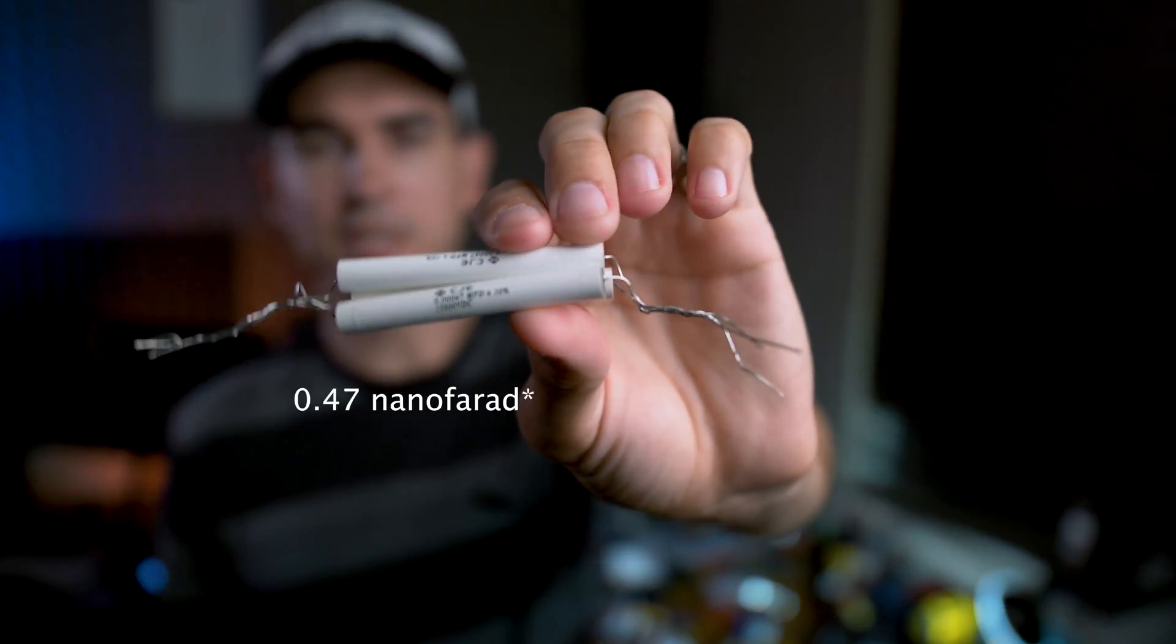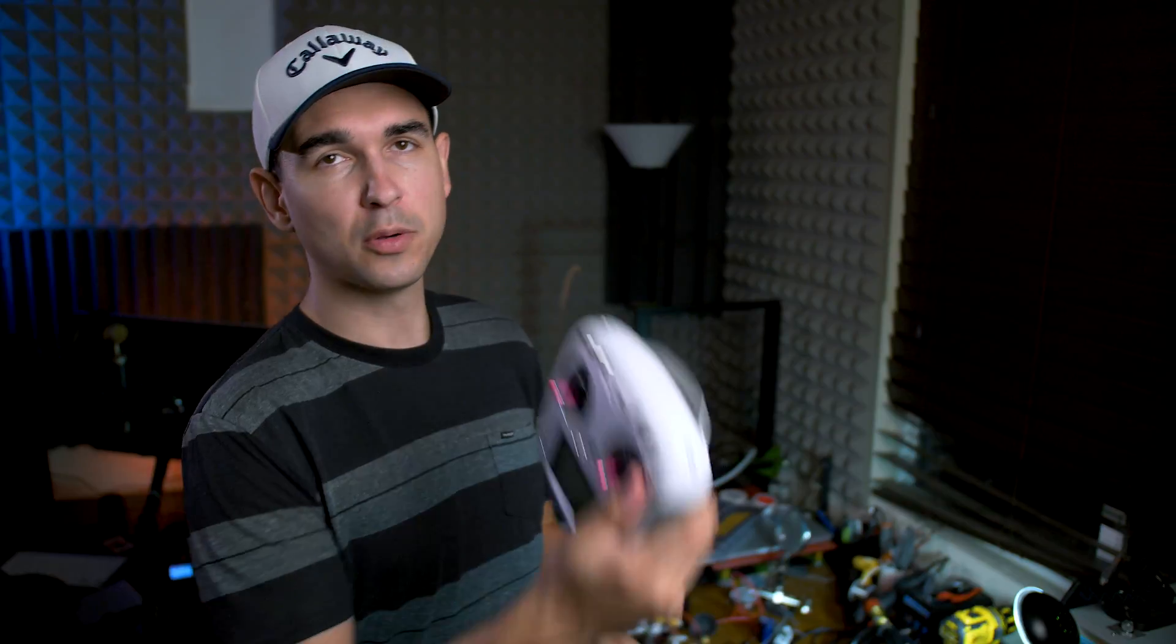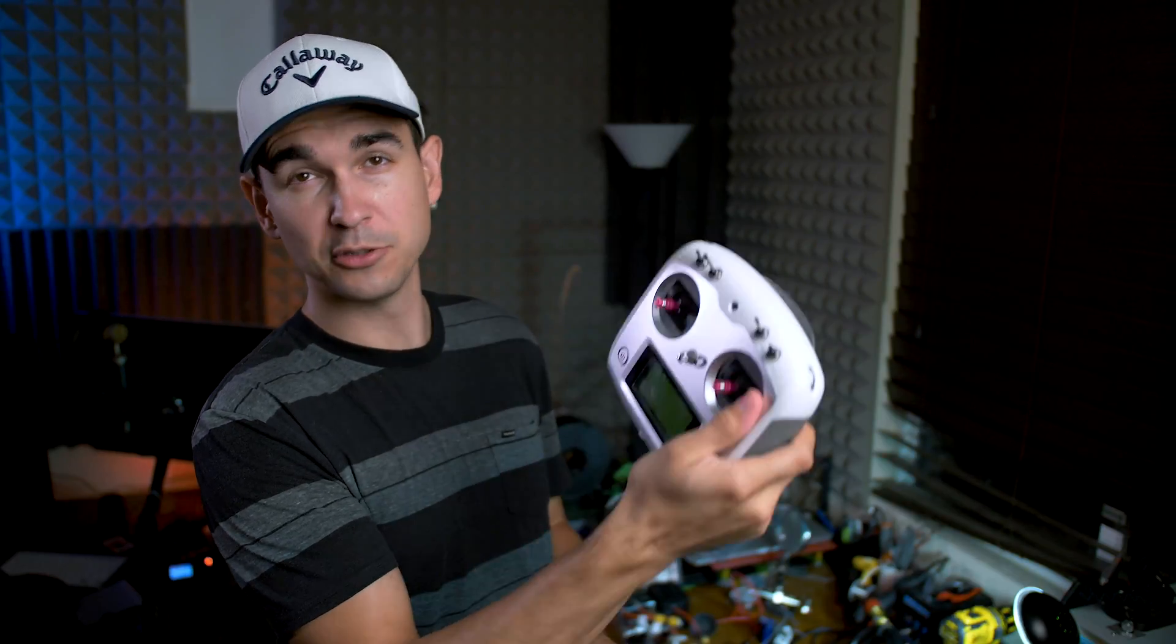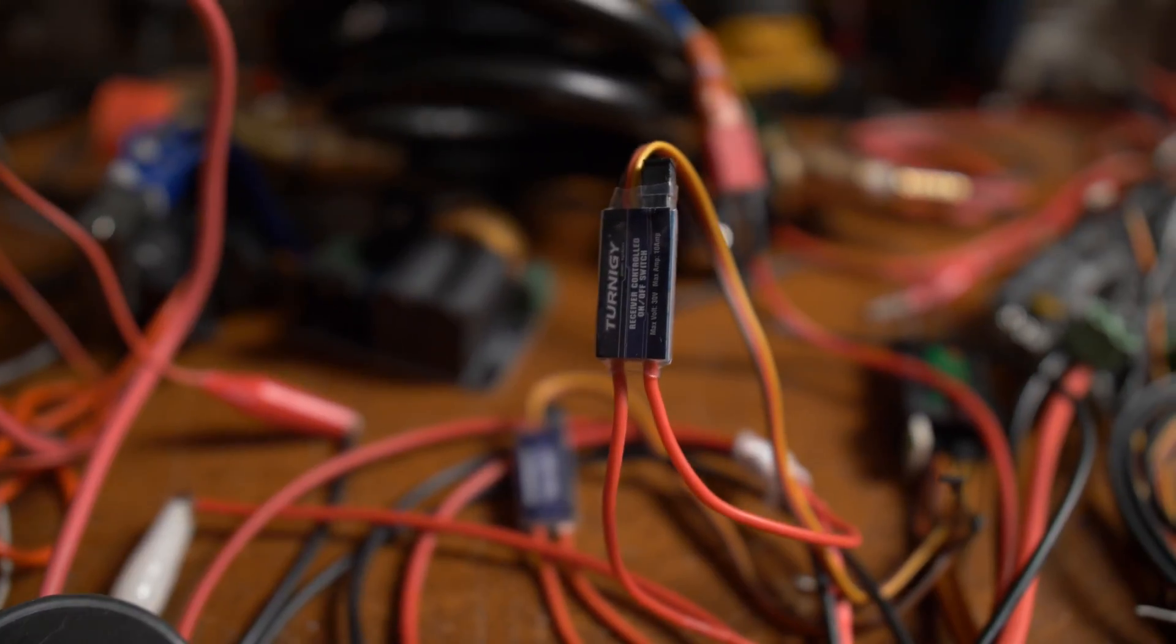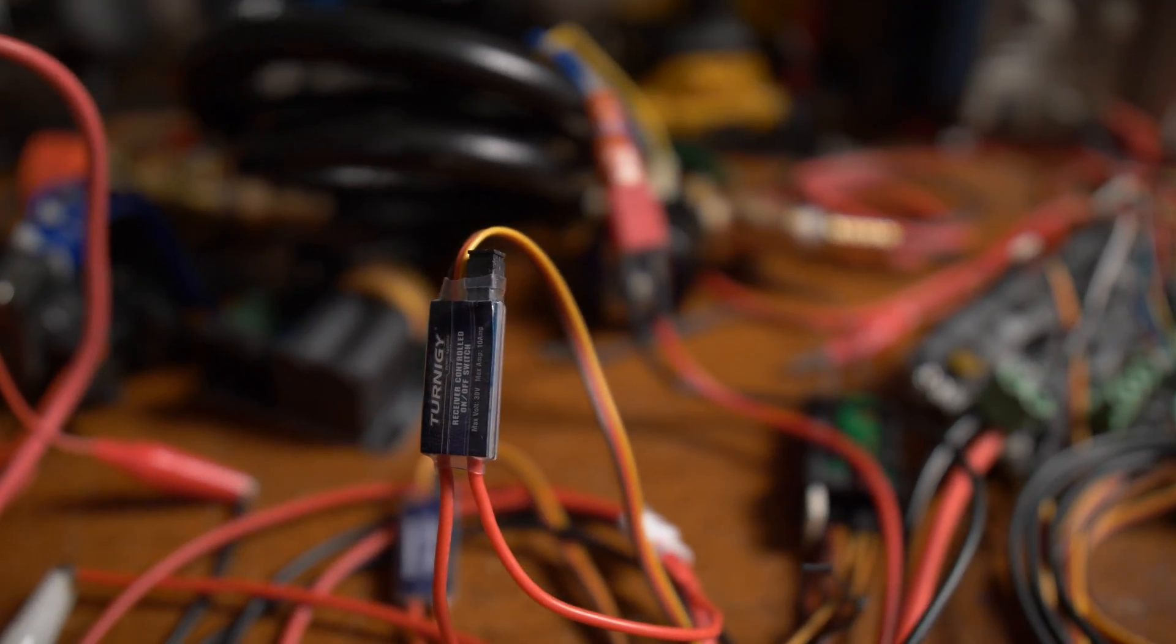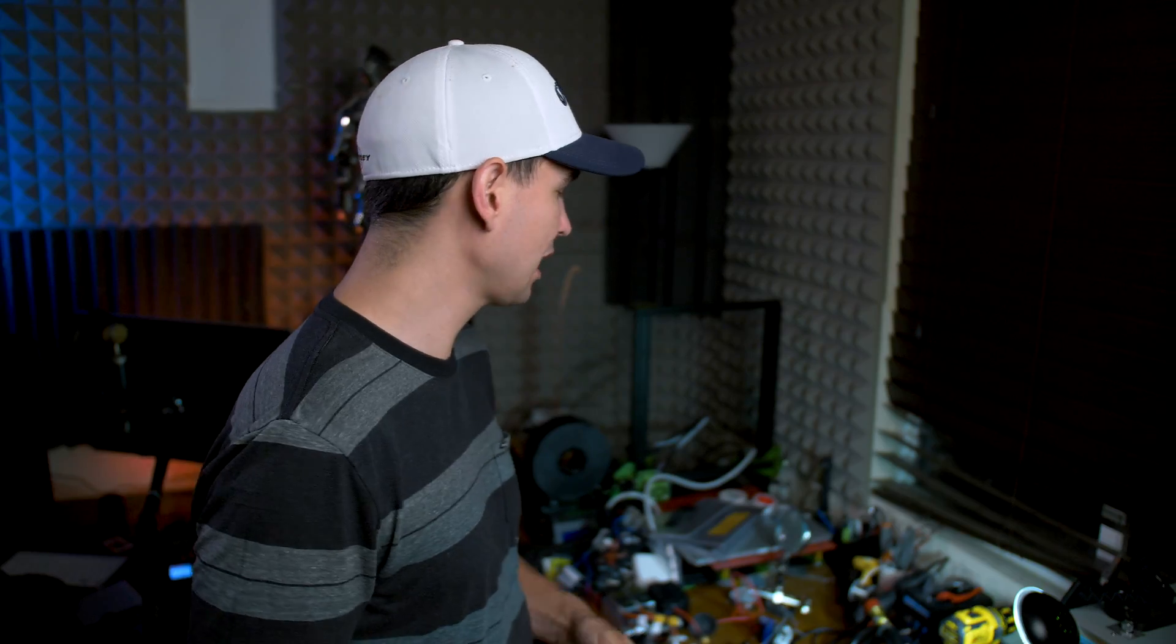The next thing you're going to want to pick up are some 0.47, 15 kilovolt capacitors. You get your choice of transmitter and receiver. Generally, the transmitter that you buy will come with a receiver that works with it. And then I found these little 12 volt 10 amp switches. They go from 12 volts to 30 volts and up to 10 amps. So that's going to work perfect for our little ZVS driver circuit.